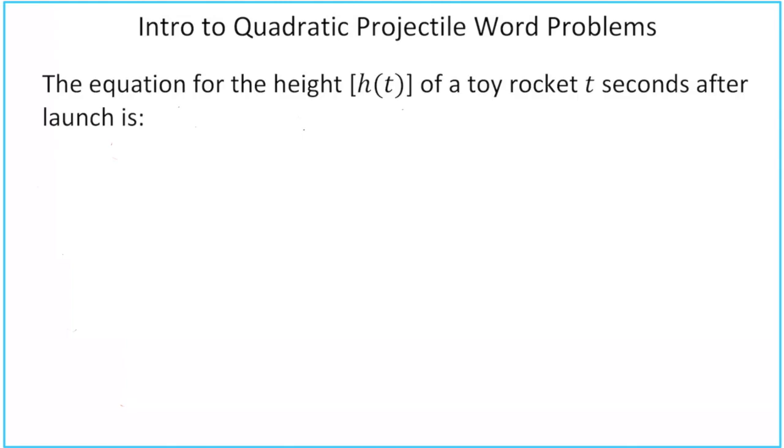The equation for the height, which is represented by h of t, of a toy rocket t seconds after launch is h of t equals negative 3 times t minus 5 squared plus 75.